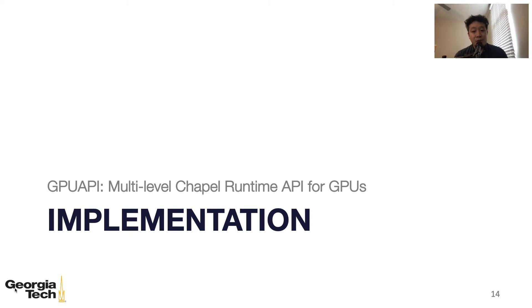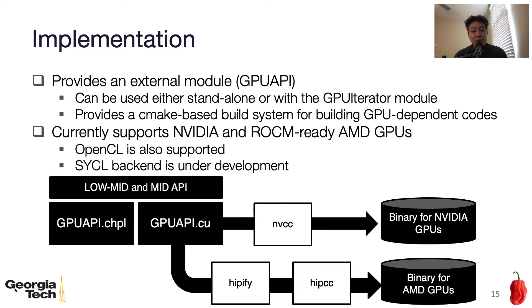Let me talk a little about our implementation of the GPU API for Chapel. We provide an external Chapel module for GPU API, carefully implemented so it can be used either standalone or with the GPU iterator module. Currently, our modules support NVIDIA and ROCm-ready AMD GPUs. Even though we implemented our API in CUDA, our CMake-based build system and the AMD toolchain are smart enough to convert it to the HIP version and create a binary for AMD GPUs. The user also has the option of using our OpenCL backend, and the SYCL backend is currently under development.